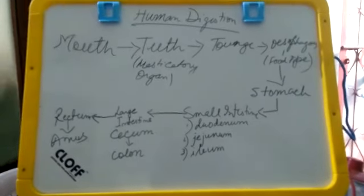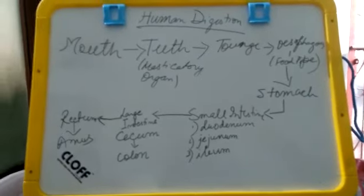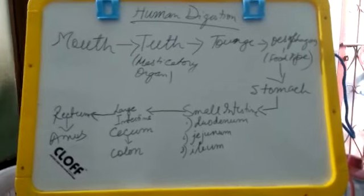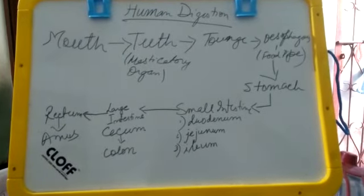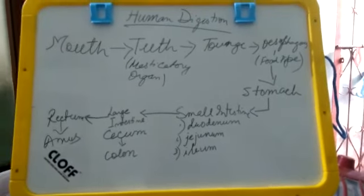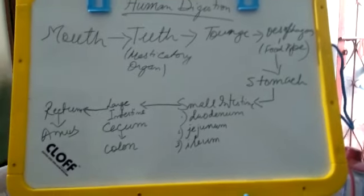Ingestion is the way of procuring food—how you take in food. You take in food with the mouth, and then come the teeth, known as the masticatory organ, which helps break down the food. We already know we have four types of teeth.